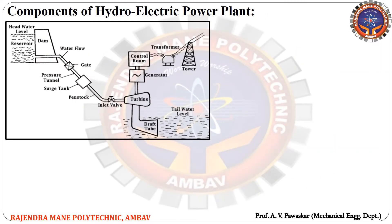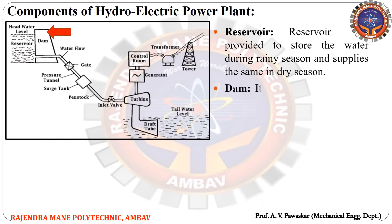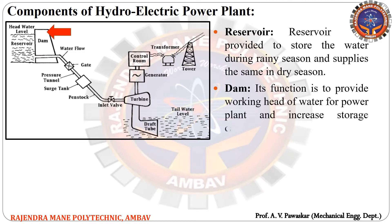Now we will discuss the functions of each component. The first component is the reservoir — it is provided to store water during the rainy season and supply the same in the dry season. The next component is the dam — its function is to provide working head of water for the power plant and increase the storage capacity of the reservoir.